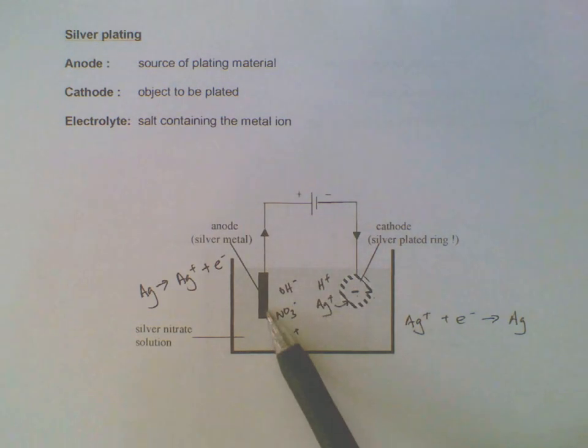And of course the anode should be the same metal that you want the plating to be carried out with. So if you want to coat it with silver, the anode must supply or replenish the silver. And finally, the electrolyte, if you want to coat it with silver, the electrolyte should contain the silver ions.